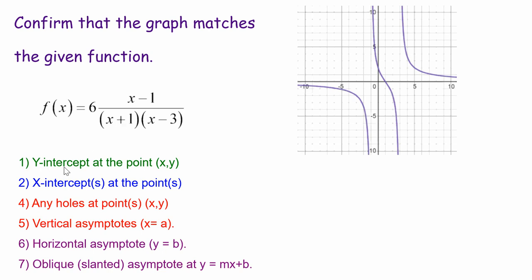We're going to look at the y-intercept, the x-intercepts, any holes or vertical asymptotes, the horizontal asymptote, or oblique slanted asymptote.